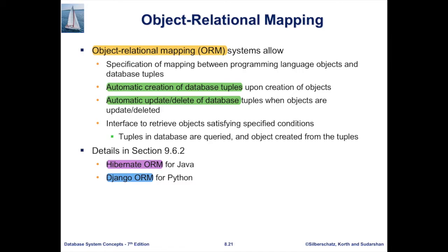The second approach is ORM — Object-Relational Mapping. This is a system that allows automated creation of database tuples when we create an object, and automatically updates or deletes tuples whenever the object is updated or deleted. It is a system inside the programming framework — for Java, the framework is Hibernate with its Hibernate ORM component; for Python, we have Django ORM. For more details, you can read section 9.6.2. With ORM, you don't need to provide SQL commands — you just use object creation and manipulation using the programming model.